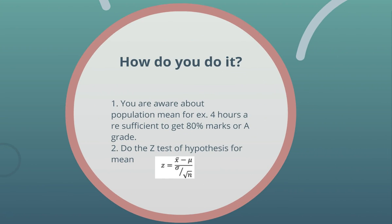Now, how do you actually perform hypothesis testing? The assumption is that you already know the population mean — for example, studying four hours a day gives 80% marks. You then perform a z-test, calculated as: z = (x̄ − μ) / SE, where x̄ is the sample mean, μ is the population mean, and the standard error SE = σ / √n — σ being the standard deviation and n the number of values in the sample. This formula gives you the z-statistic.